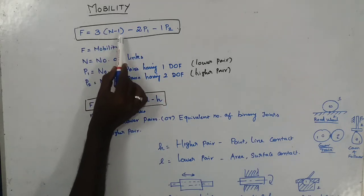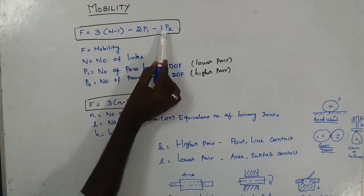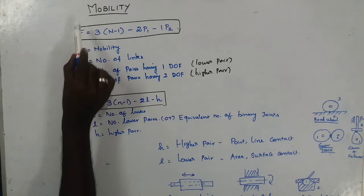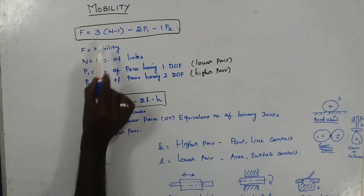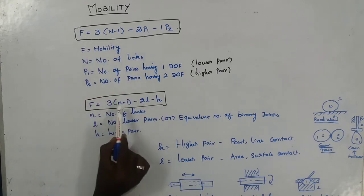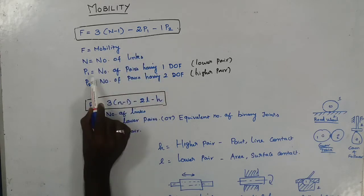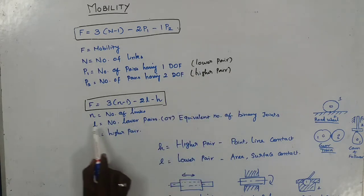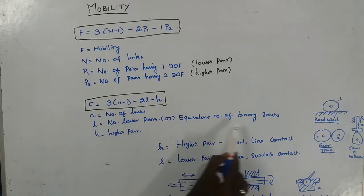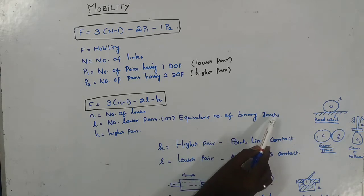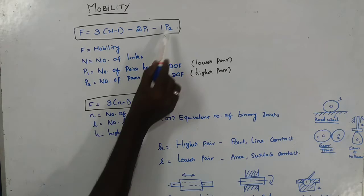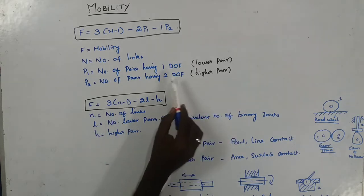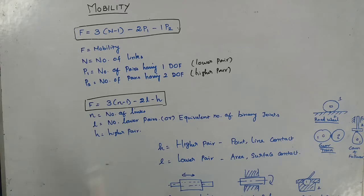The mobility formula is: F = 3(n - 1) - 2p1 - p2. Alternatively, F = 3(n - 1) - 2L - H. Here, F is mobility, n is the number of links, p1 (or L) is the number of pairs having one degree of freedom (lower pairs), and p2 (or H) is the number of pairs having two degrees of freedom (higher pairs).